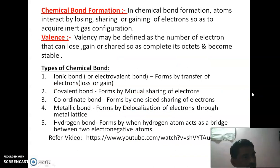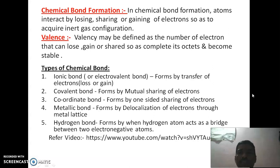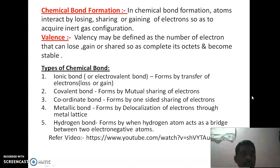The next topic is chemical bond, or formation of chemical bond. Basically, the chemical bond is formed when atoms interact by losing, sharing, or gaining electrons so as to acquire the inert gas configuration. The number of electrons to be lost, shared, or gained are known as valency electrons, and these indicate the valency. The valency may be defined as the number of electrons that an atom can lose, gain, or share so as to complete its octet and become stable.